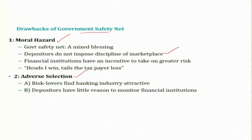Because of the existence of deposit insurance, depositors know they will not suffer losses if a bank fails. They do not impose the discipline of the marketplace on banks by withdrawing deposits when they suspect the bank is taking on too much risk. Since all deposits are insured by the government's deposit insurance corporation, depositors begin to take everything for granted. Even if a bank keeps investing in risky assets, depositors still do not take it seriously — they think it does not matter because the government will pay them back anyway. Not only individual depositors but even institutional depositors with the capacity to monitor won't do so, because they are also assured the government will pay back their deposits.